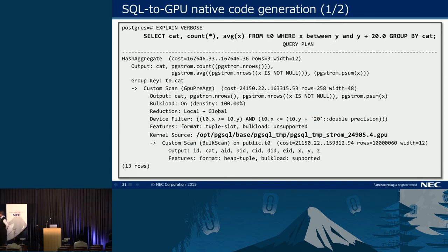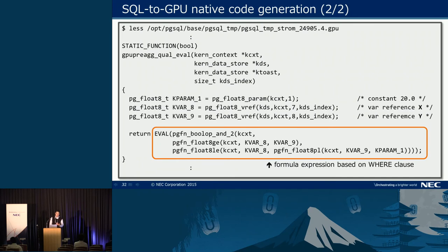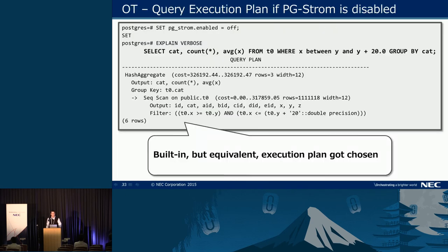The generated code includes a formula expression from the SQL query — for example, a WHERE clause condition is automatically translated and is equivalent to the portion shown in the red box. It is automatically generated, so there is no need for the user to care about it. PG-Storm compiles this code on-the-fly. When PG-Storm is turned off, PostgreSQL runs the built-in query execution plan sequentially on the CPU, and cannot utilize GPU parallelism.